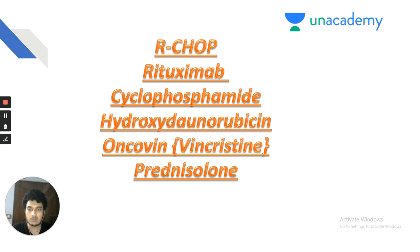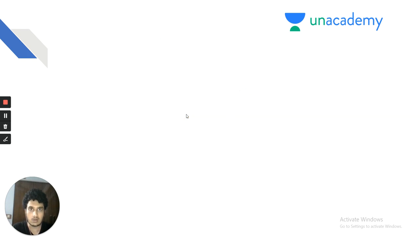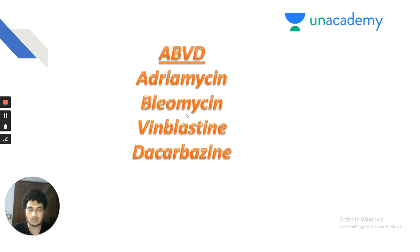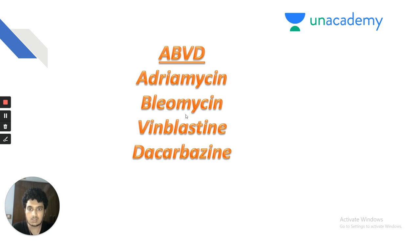The R-CHOP regimen is the regimen of choice for non-Hodgkin's lymphoma, whereas for Hodgkin's lymphoma it is the ABVD regimen — which includes Adriamycin, Bleomycin, Vinblastine, and Dacarbazine.